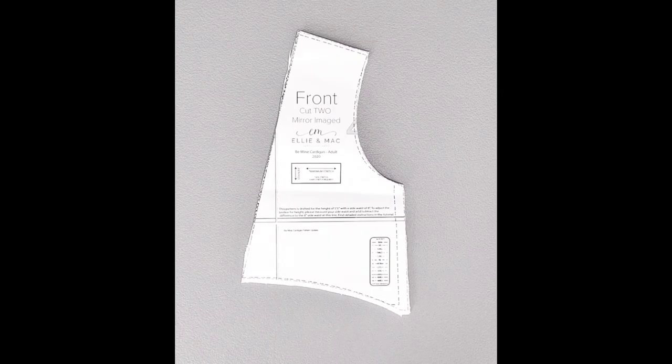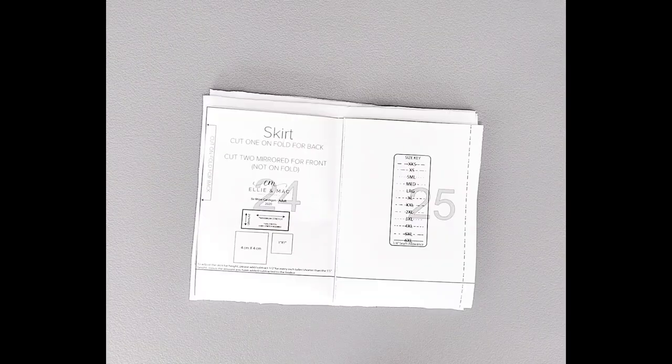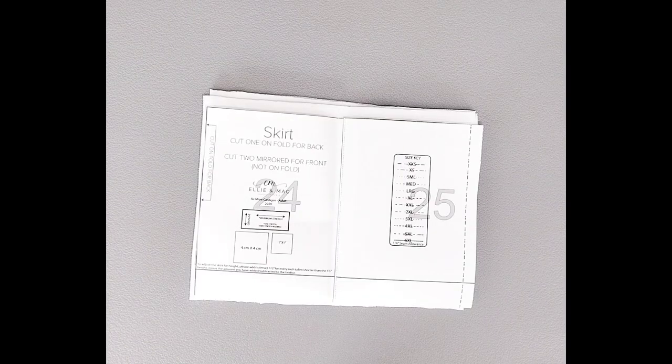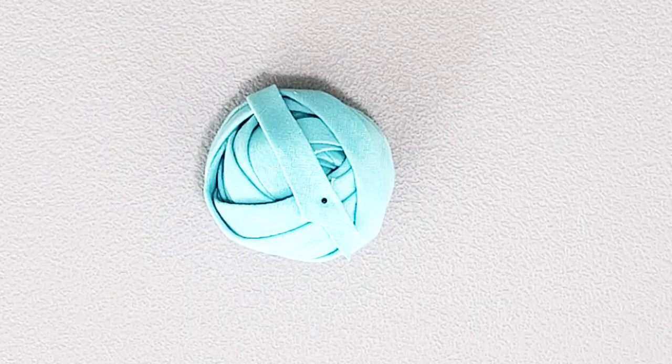You will need two front pieces mirrored, one back piece on the fold, one back skirt cut on the fold, and two front skirts mirrored, two sleeves mirrored, and your bias tape.